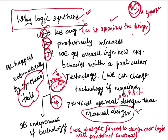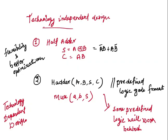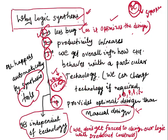Synthesis is always technology independent. This means we are not forced to design our logic with predefined constructs. For example, to design a half adder, I can write: sum = a XOR b, carry = a AND b. Or I can write it as: sum = (a_bar AND b) + (a AND b_bar), carry = a AND b. Both are valid and technology independent.